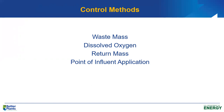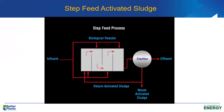Control methods are primarily about waste mass — how much waste sludge we waste from the system each day, measured in flow rate or pounds per day of solids. Dissolved oxygen gives us a little control, but not nearly the kind we get from how much sludge we waste. The return sludge ratio gives us a little control, but again not nearly as much as the waste mass. The point of influent application matters too — if we have a step feed activated sludge process, we have some capability to control where we put the influent in the reactor. Step feed activated sludge is the most flexible type of activated sludge process you can build.